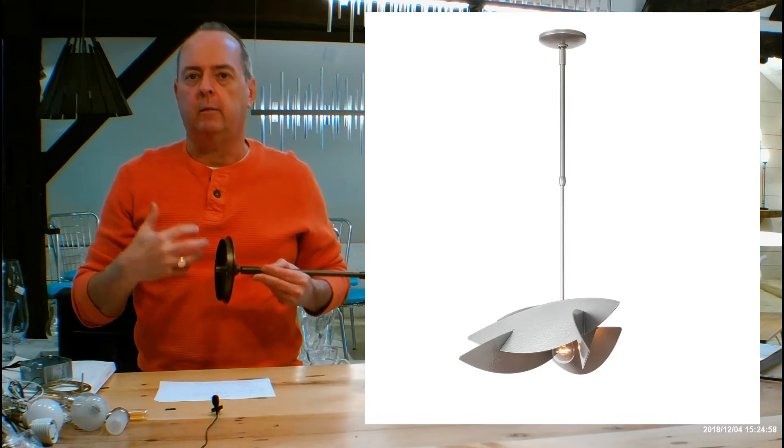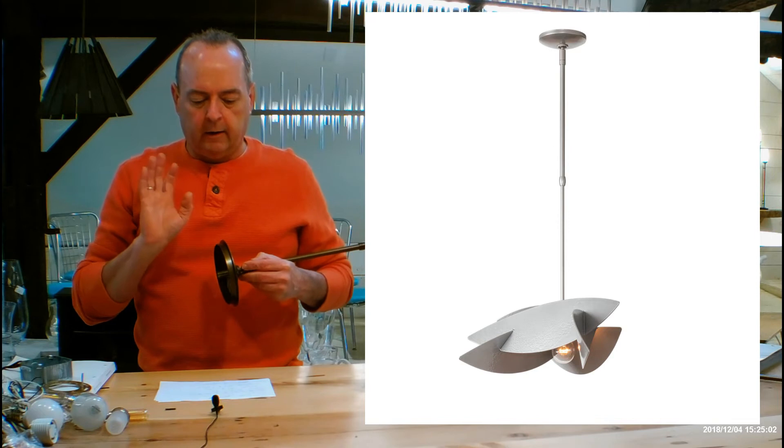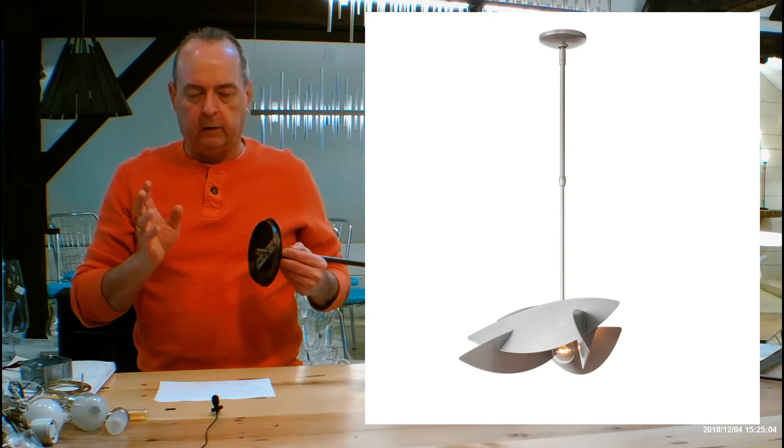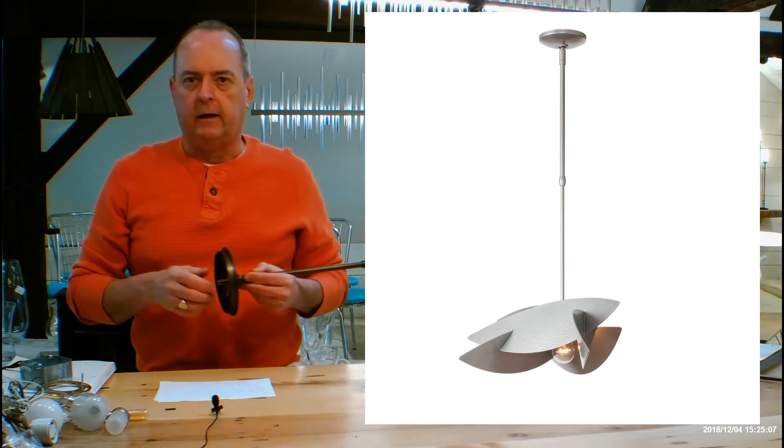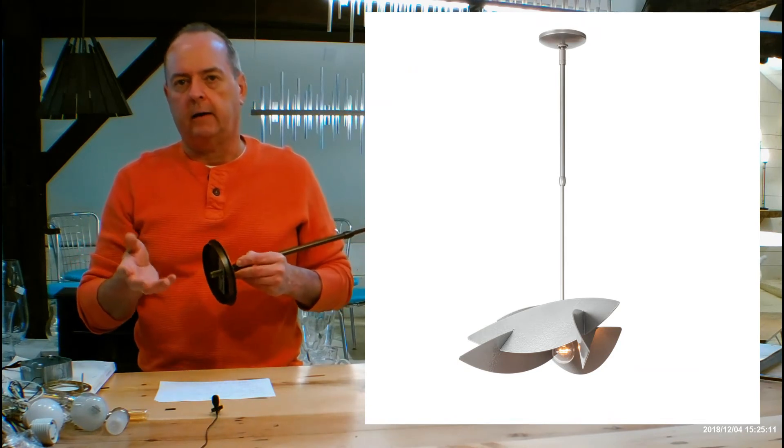How you do that is you email me—sales at handmadeinvermont.com—and you're going to say I like the Koi one light, the 131300, for my application I need this to be 16 inches overall height or 20 inches overall height, whatever.